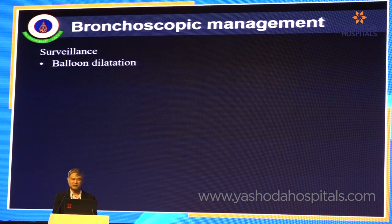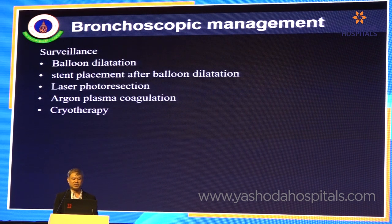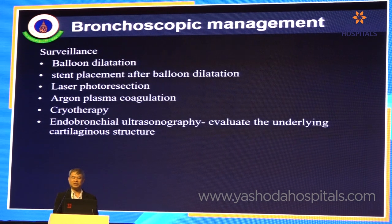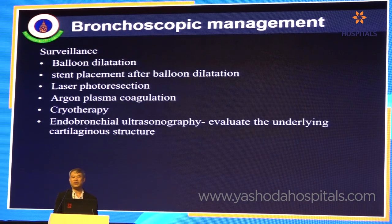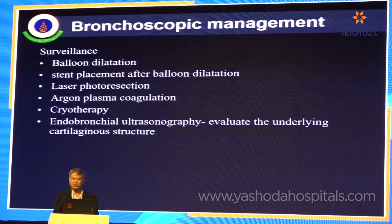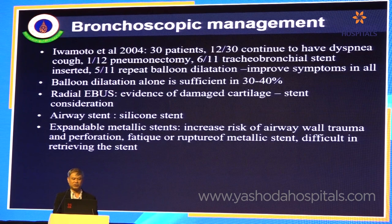If the patient has symptoms, you can do balloon dilation, stents, lasers, argon plasma coagulation, or cryotherapy. If you have endobronchial ultrasound, you can early predict whether patients will develop bronchostenosis by evaluating the underlying cartilage and structures. If the patient has no cartilage, they can easily progress to the bronchostenotic type.